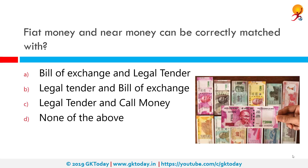Fiat money and near money can be correctly matched with: fiat money with legal tender, and near money with call money. Fiat money is a currency without intrinsic value that has been established as money, often by government regulation. It does not have a use value and has value only because a government maintains it or parties in exchange agree on its value.